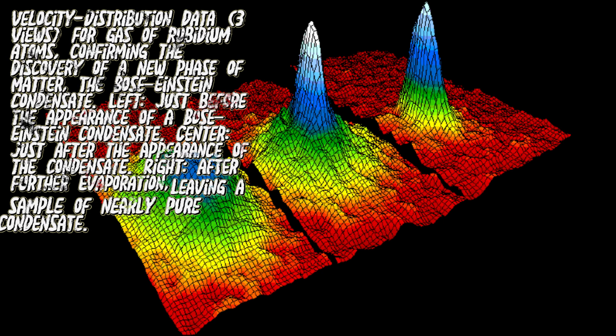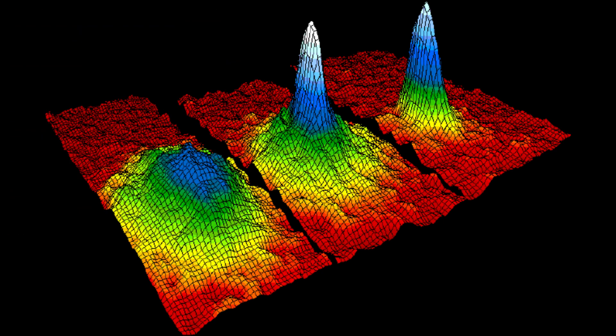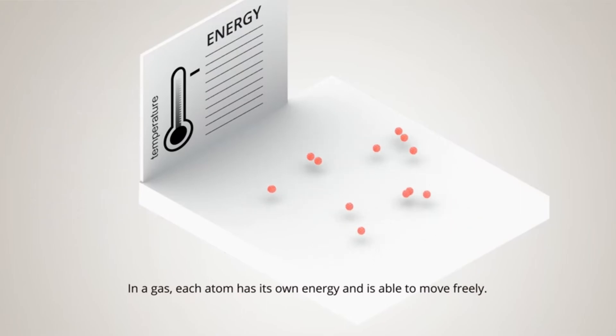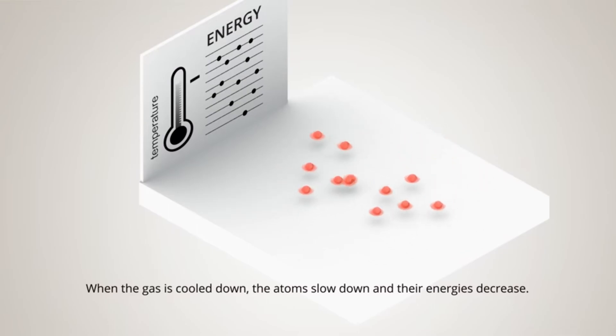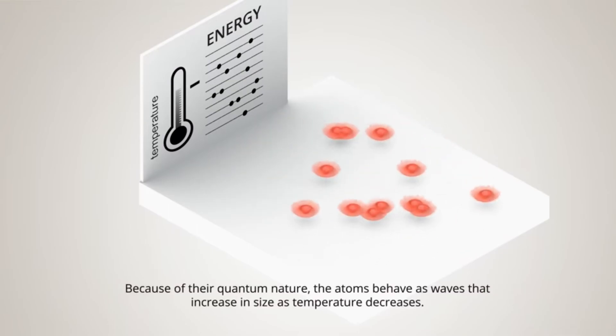Number three is Bose-Einstein condensate. In 1924, Albert Einstein and Satyendra Nath Bose predicted the Bose-Einstein condensate, sometimes referred to as the fifth state of matter. In a BEC, matter stops behaving as independent particles and collapses into a single quantum state that can be described with a single uniform wave function.